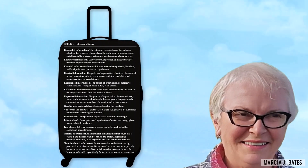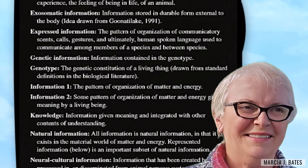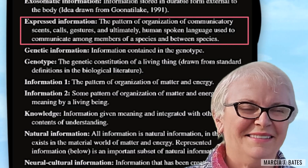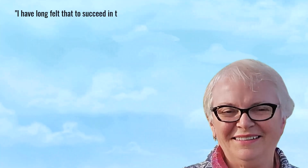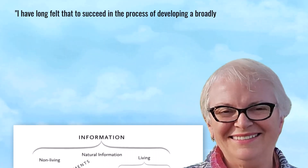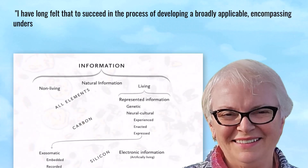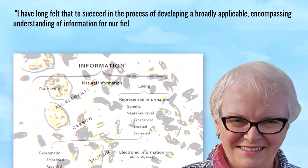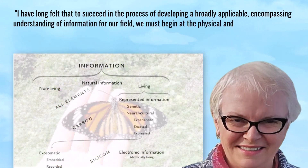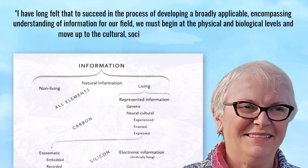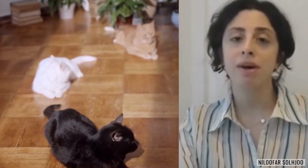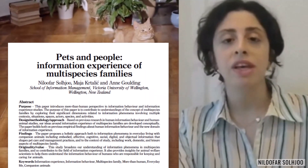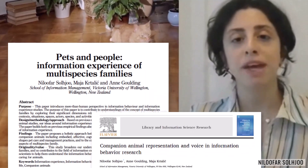Her conception of information is complex and includes the communicatory sense — calls and gestures of animals. She writes: 'I have long felt that to succeed in the process of developing a broadly applicable, encompassing understanding of information for our field, we must begin at the physical and biological levels and move up to the cultural, social, cognitive and aesthetic.' A pioneer and champion of the multi-species perspective in information science is Niloufar Solju.